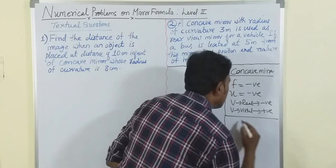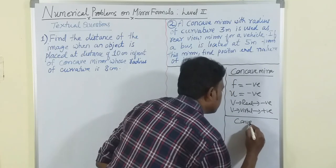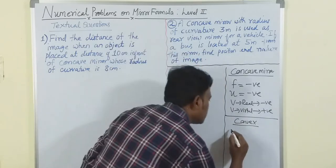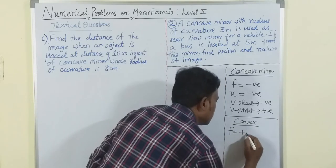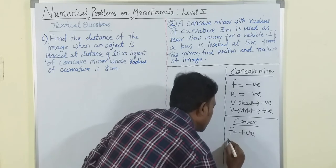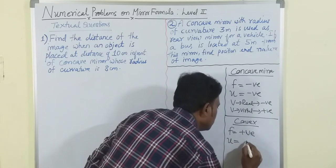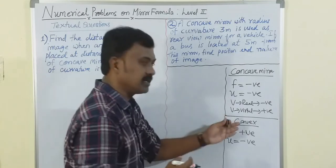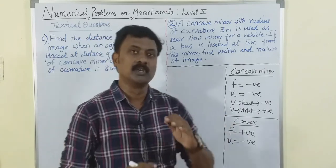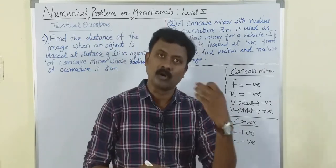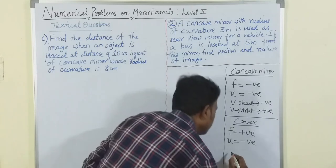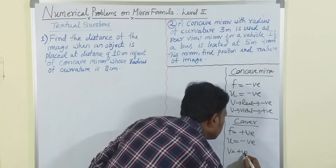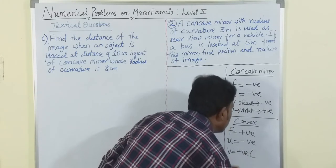Coming to a convex mirror: f is always positive, and u is always negative. In case of a convex mirror you always get a virtual image, therefore v will always be positive because it is a virtual image.